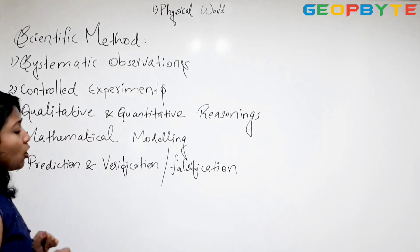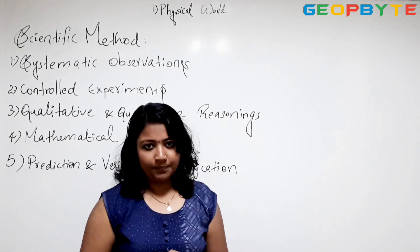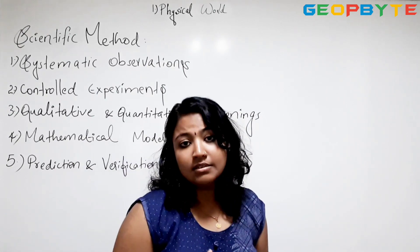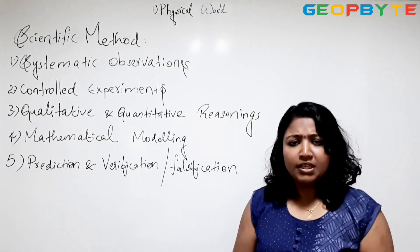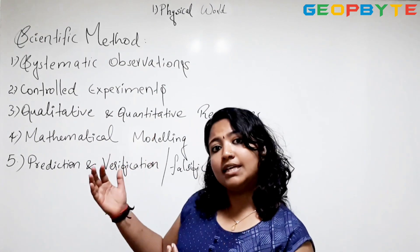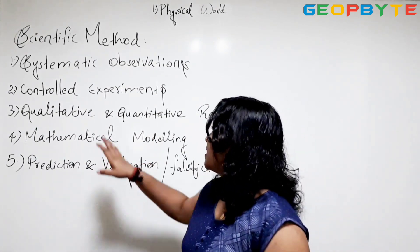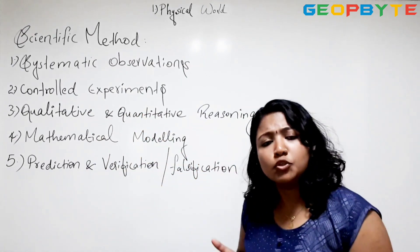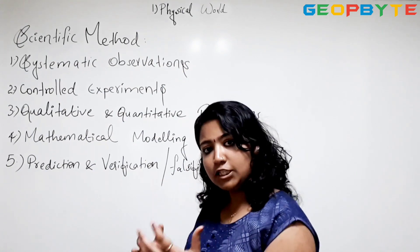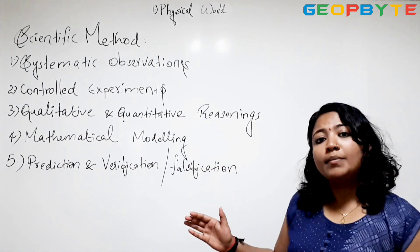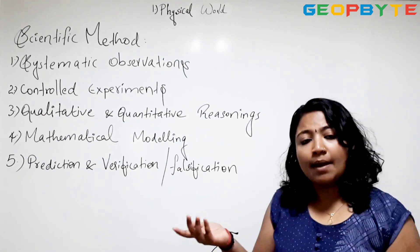The first step is systematic observations — everything starts with observations. As we all know, Sir Isaac Newton gave the universal law of gravitation. He keenly observed how an apple was falling and reaching the ground. Then comes controlled experiments. We have to perform a series of experiments to ensure that a phenomenon happens every time, because a certain thing can happen by chance also.